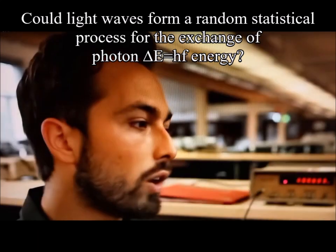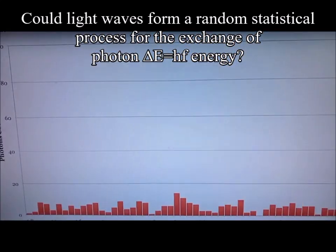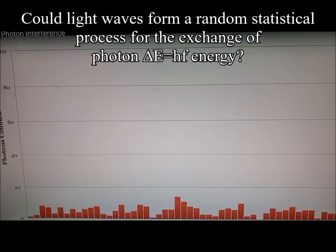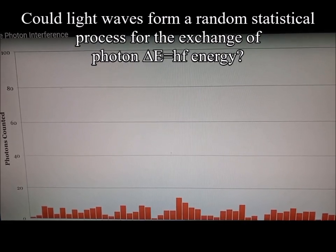I'm plotting a graph of the number of photons counted as a function of position across the detector. If you have a look after one second, the distribution seems random. There doesn't seem to be any pattern in the arrangement of those photons as they hit the detector.